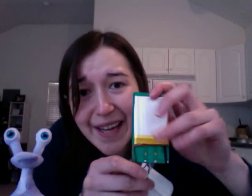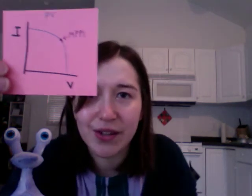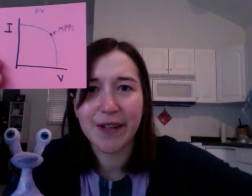Here's an example of a photovoltaic cell. You can see that it has a little positive and negative on it, just like the battery, so you have to orient it one side or the other, but it provides power in a very similar way. One of the big differences, though, is that its characteristic curve is very different.